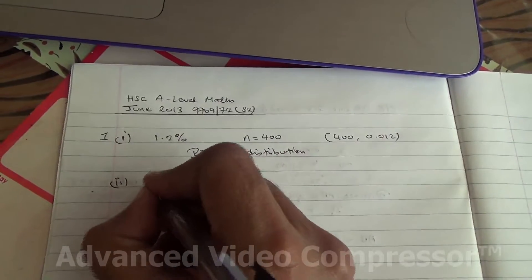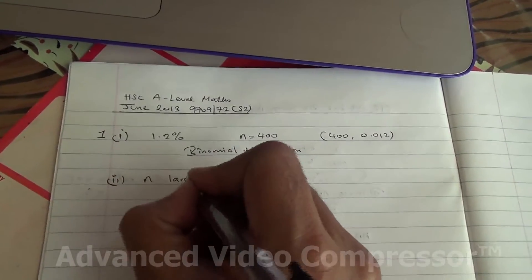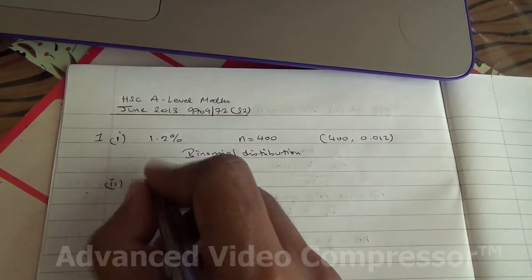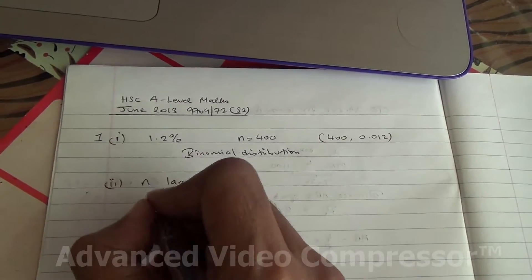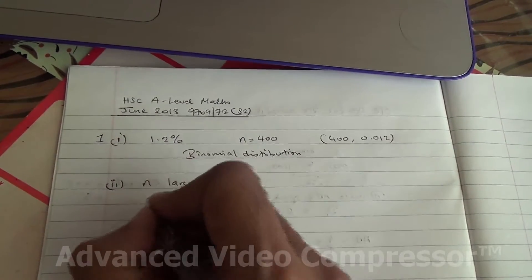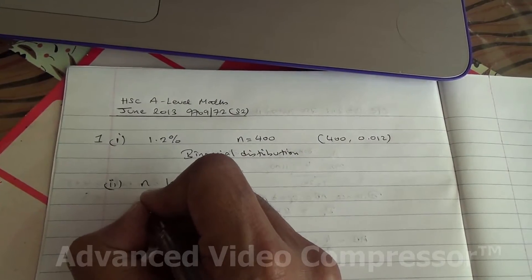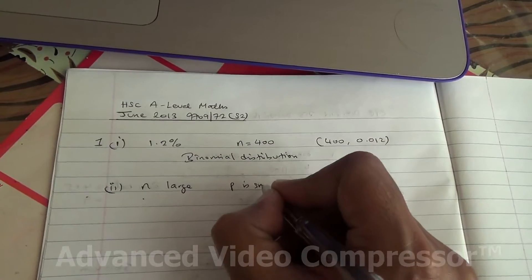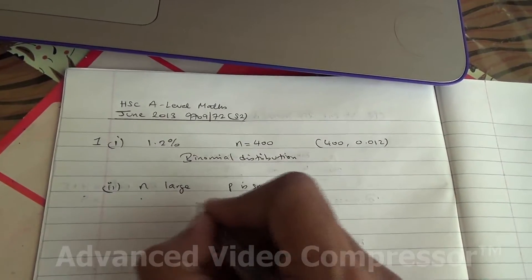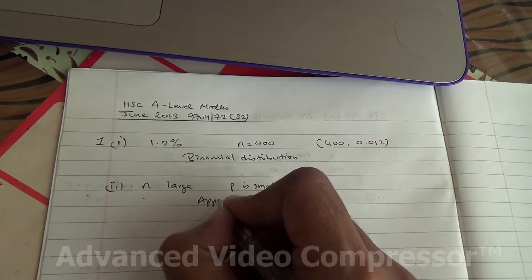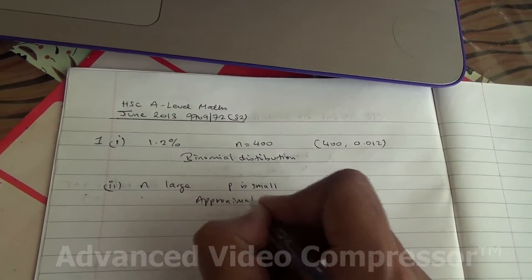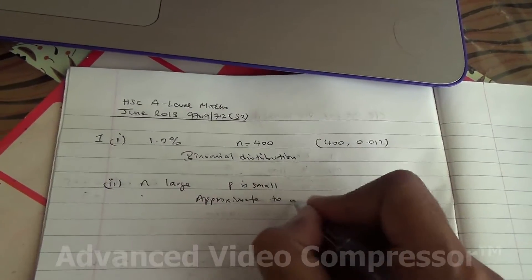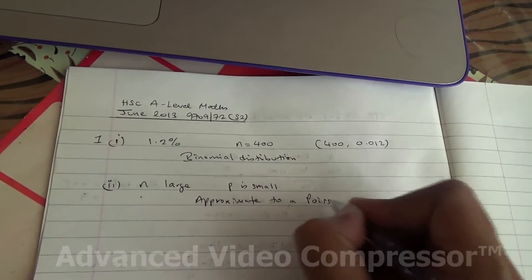Because n is large and the mean lambda, the mean is small, that is p is small, therefore this is going to approximate to a Poisson distribution.